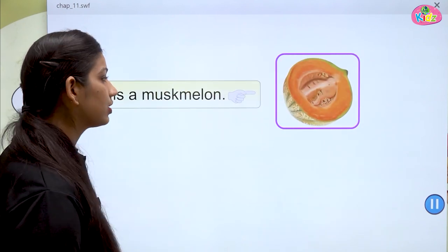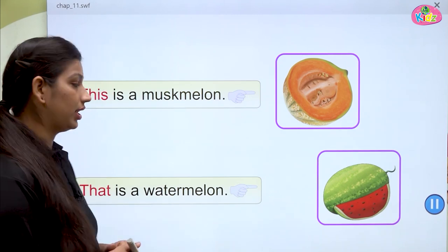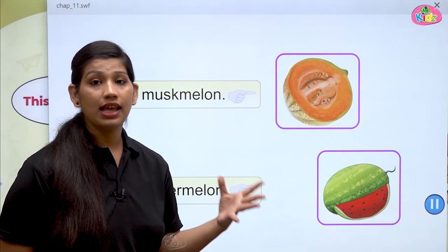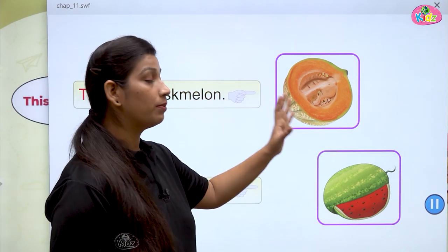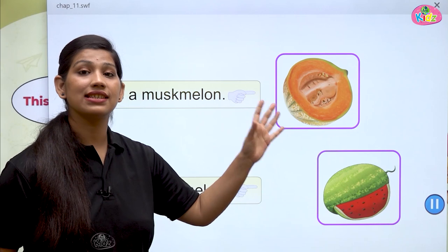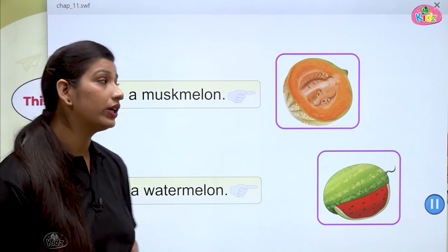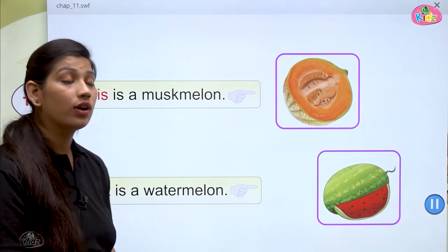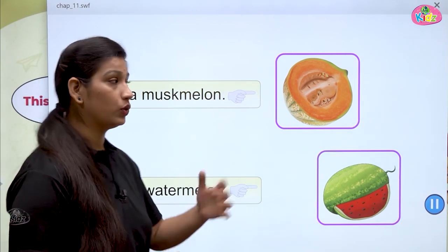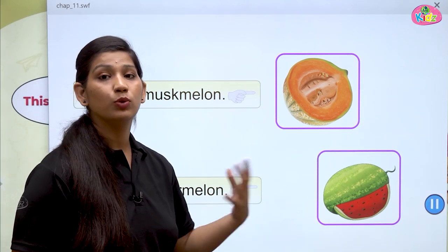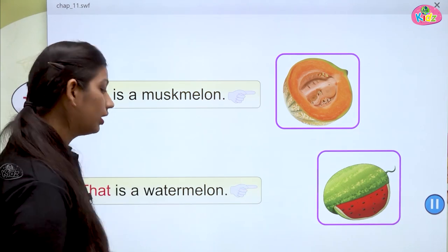Let us move forward. Here you can see a picture of musk melon and here you can see a watermelon. Can you tell me which is this and which is that? In dono mein se musk melon paas hai, toh musk melon hoga this — this is a musk melon. But the watermelon is far — watermelon toh door hai. So that is a watermelon. Koi bhi cheez jab paas hogi toh this, jab door hogi toh that.